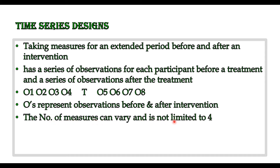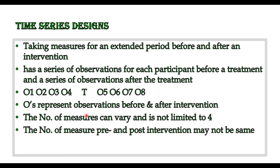The number of measures can vary and is not limited to four. Treatment was introduced after four observations with four post-observations in this example, but it is not necessary to have four observations before the treatment. We may have two, three, or ten observations. Similarly, it is not necessary to have an equal number of observations on either side — we may have four before and five, six, or even fewer after the treatment.